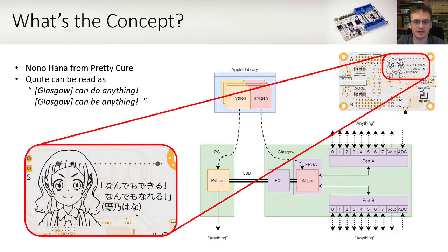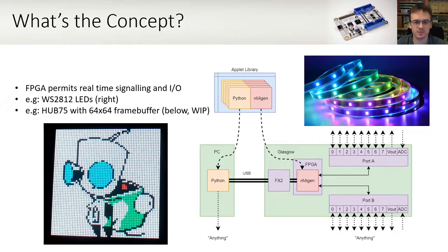If you've had a look at a board, you'll likely have seen Nono Hanna from Petit Cure on the back. Her quote can be read in English as: Glasgow can do anything, Glasgow can be anything, and this really emphasises the purpose of this project. One of the major benefits is that we can deal with non-standard hard real-time signalling. Signals are generated and handled in the FPGA, which means there's no need to worry about software or interrupts interfering with your waveform. There's no need to misuse peripherals like SPI or I2S either.